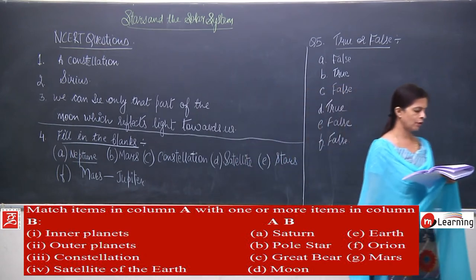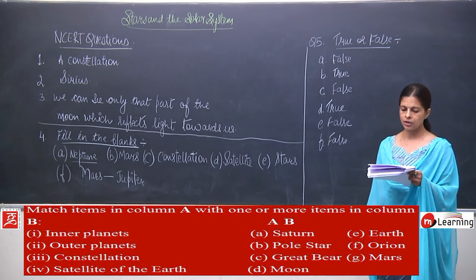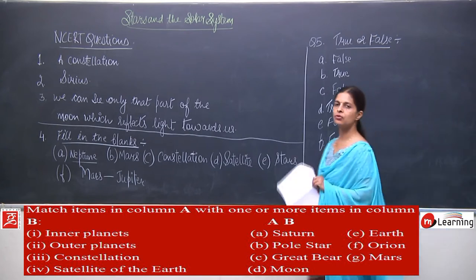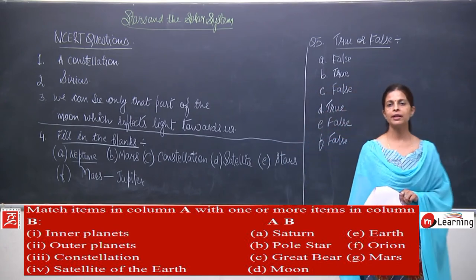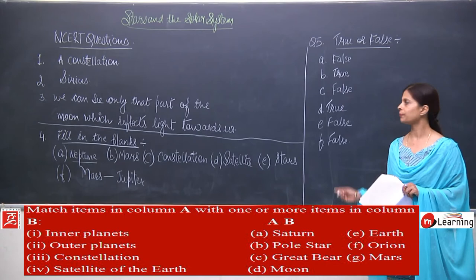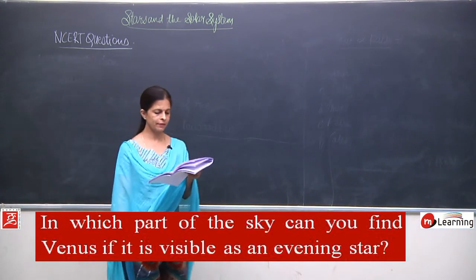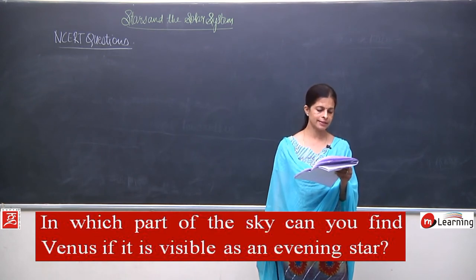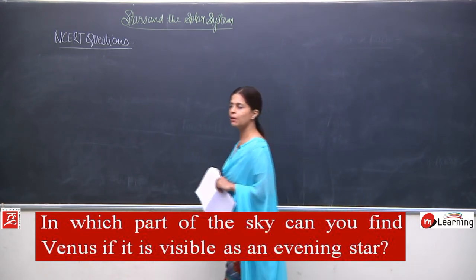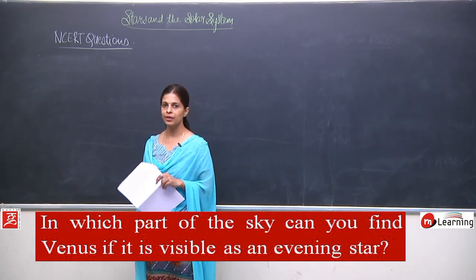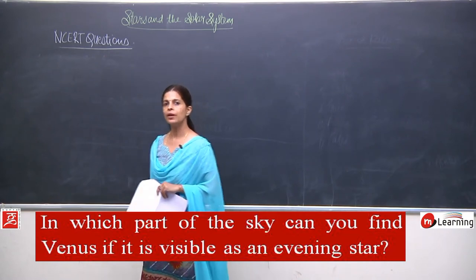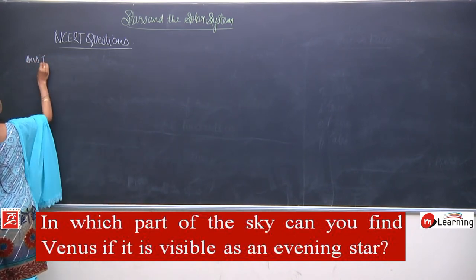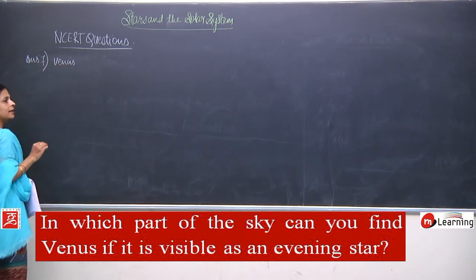We will skip question number 6 and go directly to question number 7: in which part of the sky can you find Venus if it is visible as an evening star? Venus can be seen in the western sky after sunset, and that is when it is known as the evening star.